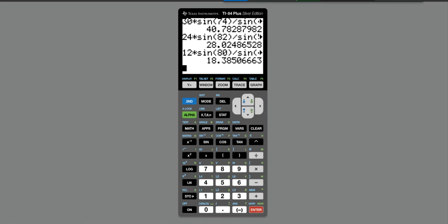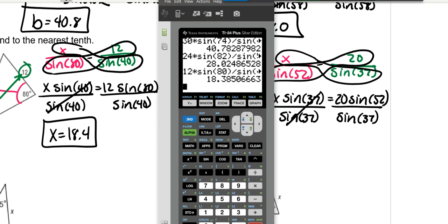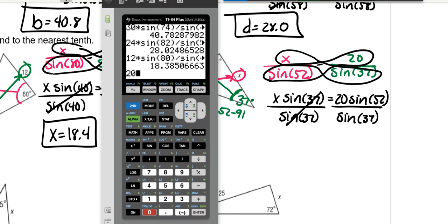So you put that in your calculator. That's 20 times the sine of 52 divided by the sine of 37. That's 26.18, so 26.2.